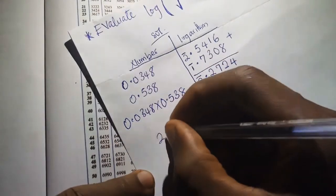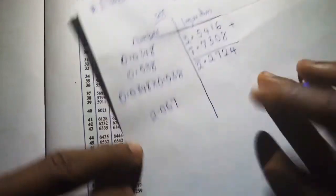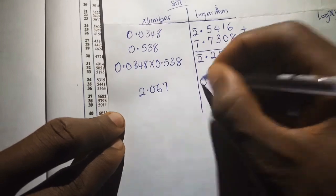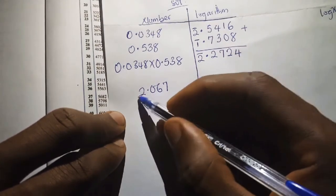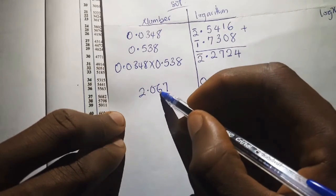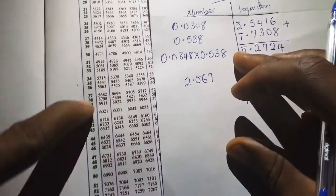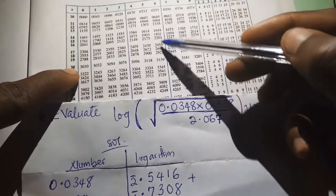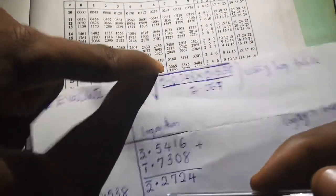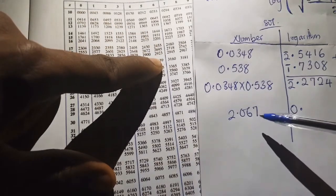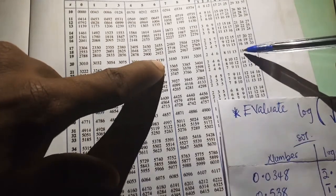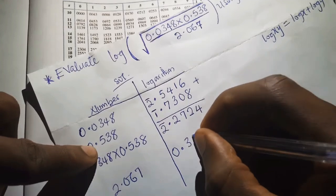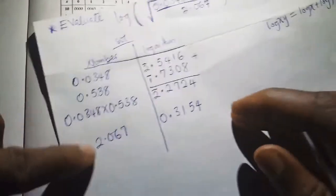Now we move to the denominator: 2.067. This number is already in standard form since the decimal point is after the first significant figure, so the characteristic is 0. We locate the first two digits 20 in the log table, then look under column 6, giving 3139. The difference for the fourth digit 7 is found under differences as 15. Adding 15 to 3139 gives 3154.